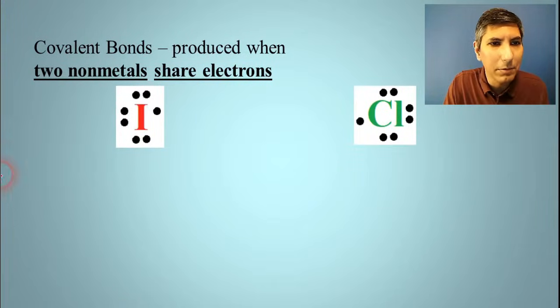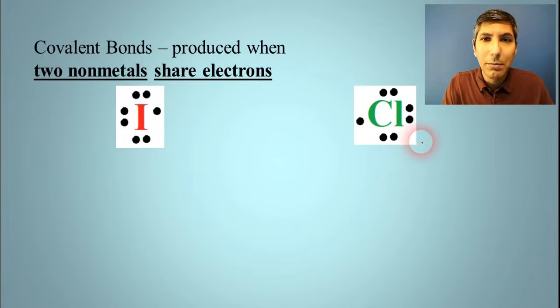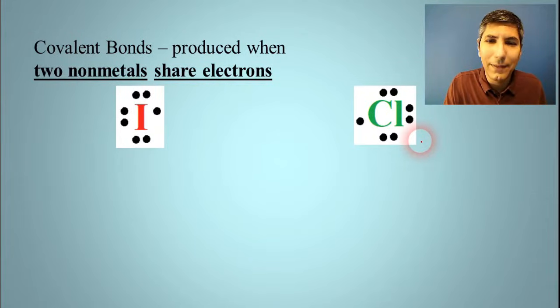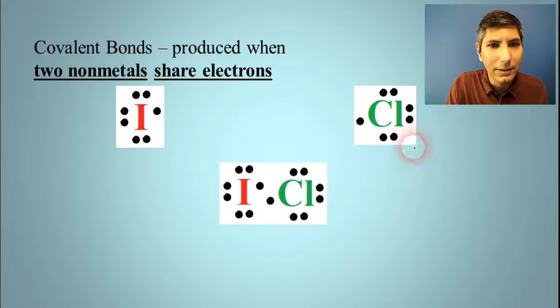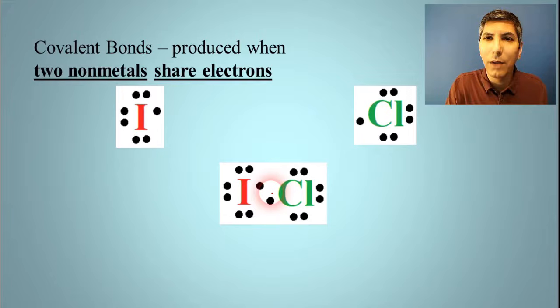So here we have an example of this. We have iodine and its seven valence electrons, and we have chlorine over here with its seven valence electrons. As we've learned in previous lessons, each of these atoms would really be more stable having eight valence electrons, having that nice stable octet. Well, what they can do is they can get together like this, and they can take this electron right here and that electron right there and share them in the middle. That way, both of these atoms can lay claim to both of those valence electrons in the middle. So we have a shared electron pair. And this is a good example of a covalent bond, two nonmetals sharing a pair of electrons.